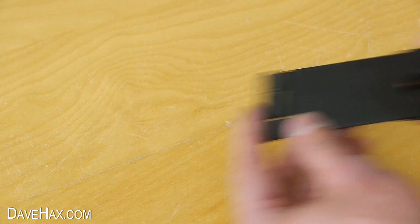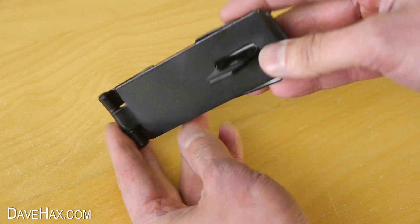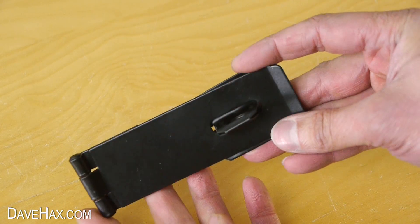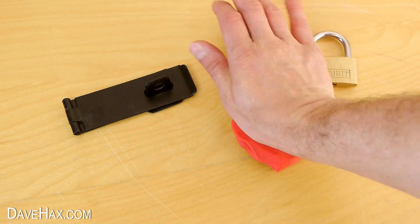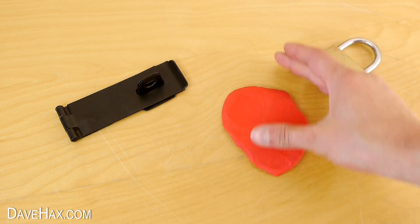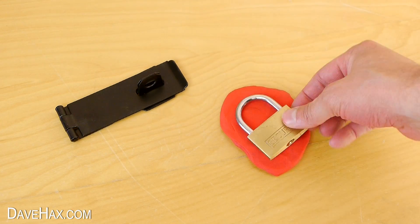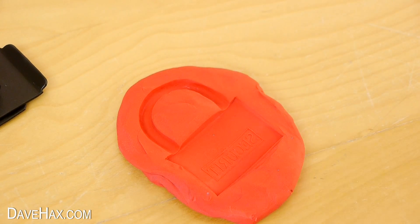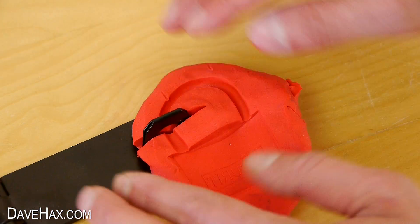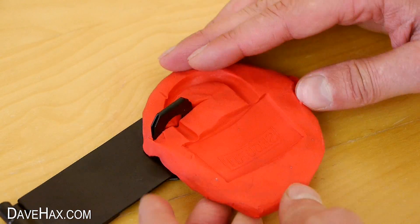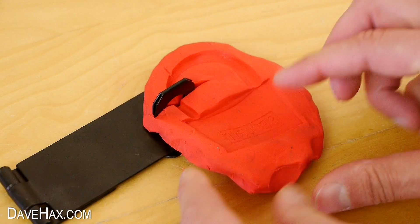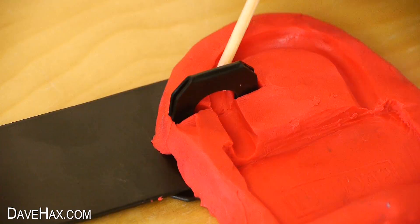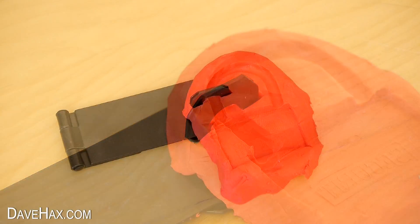I thought it could be fun to try casting another padlock through the middle of this hasp and staple. So I flattened out the plasticine, stamped in my padlock again, and this time I put a slice in the mold here so I could wrap it around the metal like this. I used a skewer to carefully smooth out the gap, and there's our mold complete.